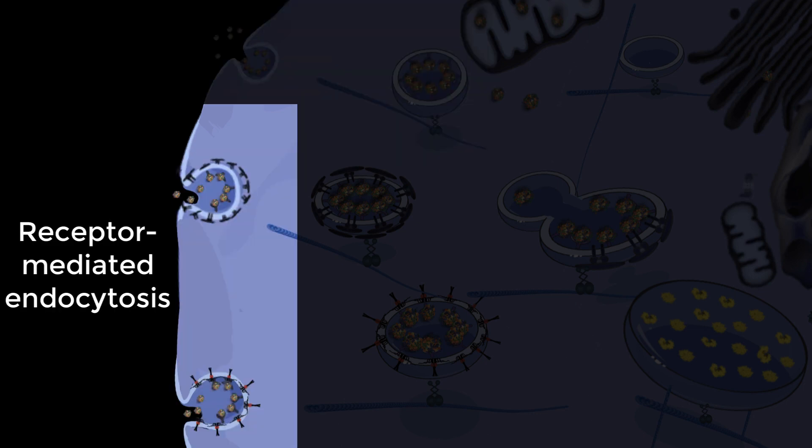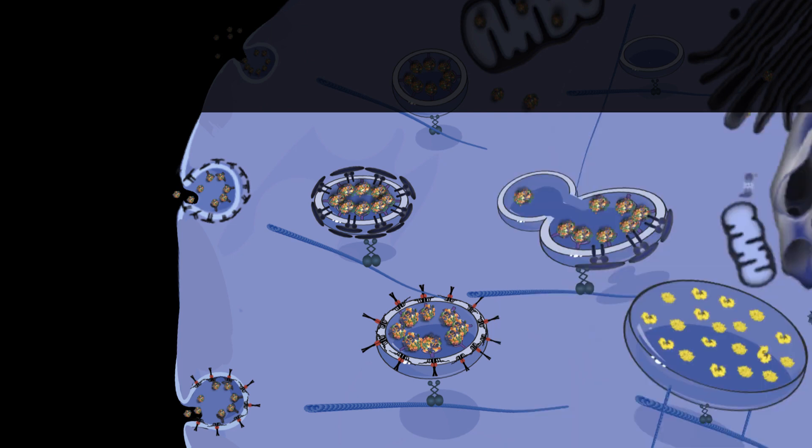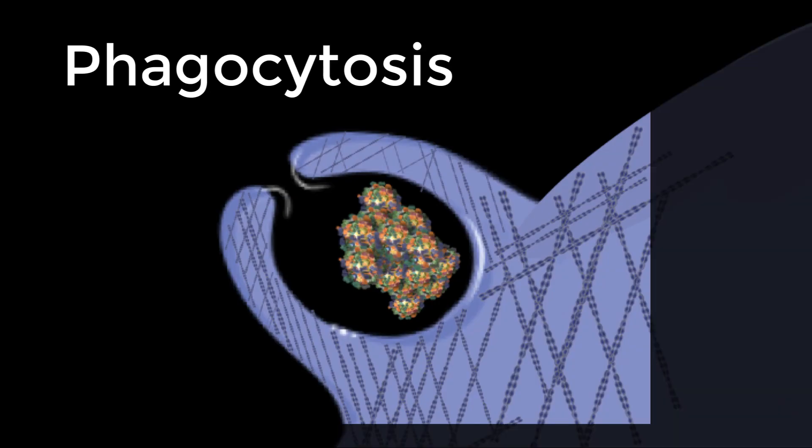Receptor-mediated endocytosis involves attachment of a specific molecule to receptors on the cell membrane. Macromolecules such as sugars, cholesterol, and hormones are taken up by receptor-mediated endocytosis. Phagocytosis is a more specific endocytotic process and it captures and uptakes bacteria and cell debris.